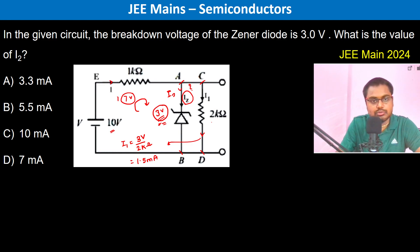Therefore, the current through the 1 kilo ohm resistor is 7 volts divided by 1 kilo ohm, which is 7 milliampere. I1 is 1.5 milliampere.